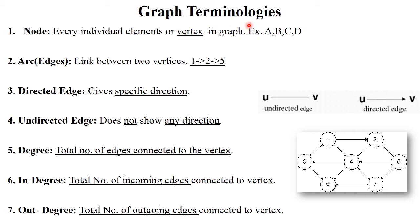Next point is graph terminology. The first term is node — each individual element or each vertex is called a node. In the diagram, 1, 2, 5, 4, 3 are called nodes or vertices. Next is arcs, which means edges — the link between two vertices. For example, 1-2, 2-4, 2-3 are called edges.